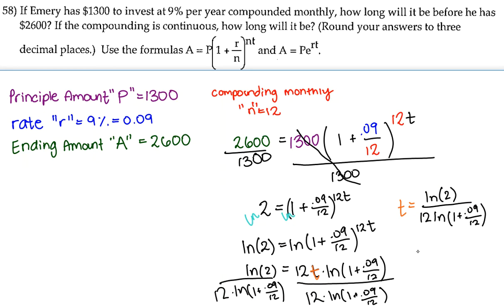Plugging that into my calculator, I got t is equal to 7.730 and the next number is 4, but we are rounding only 3 decimal places. So the answer is going to be t equals 7.73 years.